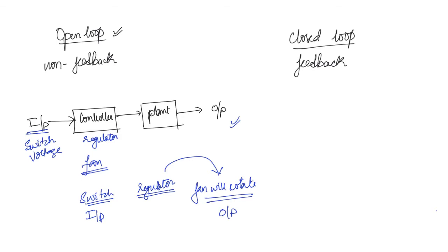Depending on the setting of the regulator, we will get a modified voltage signal. The plant will be the fan — whatever components are present in the fan — and the output will be the rotation of the fan. This is an example of an open loop system.